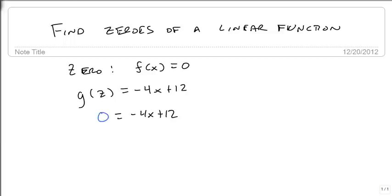And notice that this, then, is just a linear equation. So let's subtract 12 from both sides, get minus 12 equals minus 4x, divide both sides by negative 4.